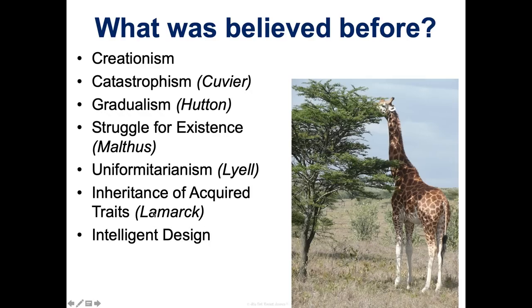The most interesting to me is Lamarck. He came up with the inheritance of acquired traits, and this is what a lot of people think when they think evolution. Lamarck said that organisms evolve through use and disuse. For example, giraffes competing for food at the bottom of a tree would stretch their necks to reach higher — by stretching they accessed more food, lived longer, reproduced more, and passed on their stretched neck to their descendants. So over time, giraffes evolved longer necks to survive and compete for food.